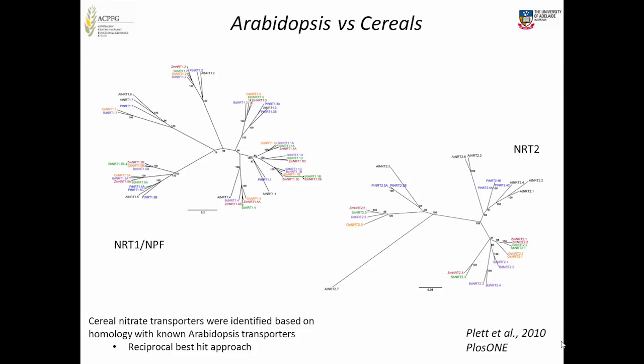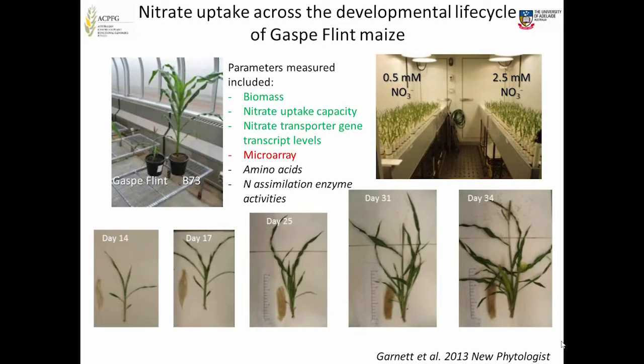Using all that knowledge about the transporters, we wanted to know what they were doing. This is a study we did in hydroponics with Gaspé Flint, which is a small stature maize with a short life cycle. These two plants were planted at the same time — that's B73, the standard maize that was first to be sequenced, and that's Gaspé Flint, which is flowering there.